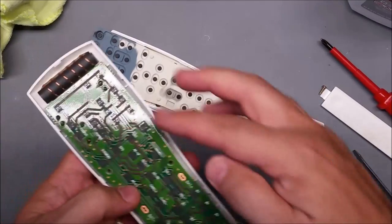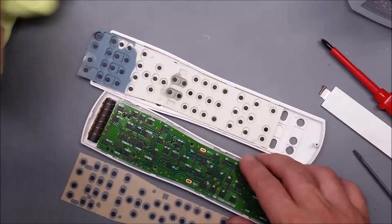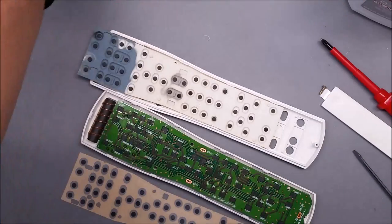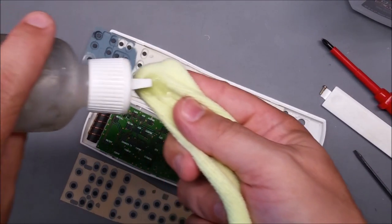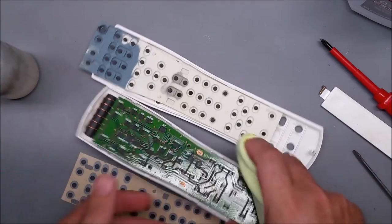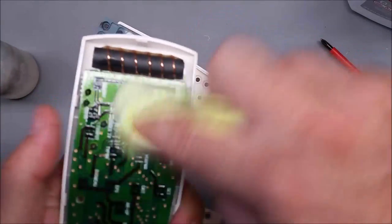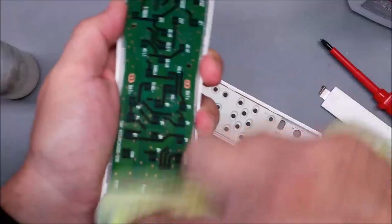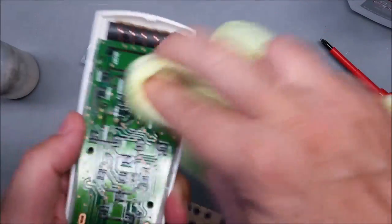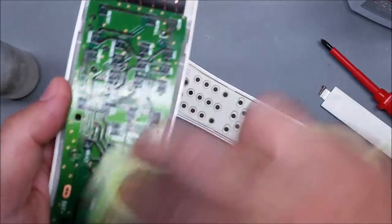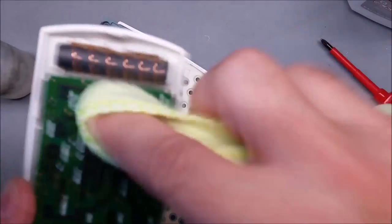So the important thing is to get this nice and clean. I've got some rubbing alcohol. I'm just going to wet a rag and clean it up. There's really nothing on this you can damage with rubbing alcohol, but still I wouldn't just pour it on there. Just wet the rag. You need to do it a couple times.